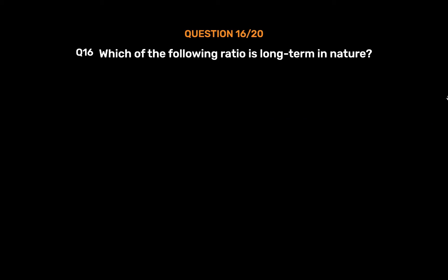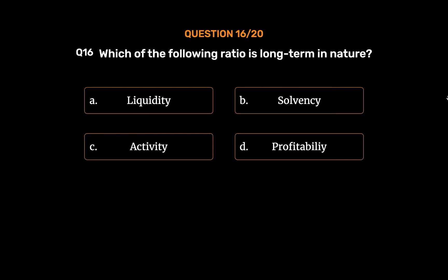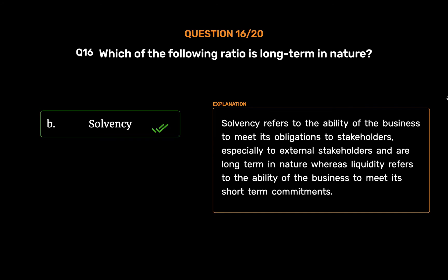Question number 16. Which of the following ratio is long-term in nature? Option A: Liquidity. Option B: Solvency. Option C: Activity. Option D: Profitability. The correct answer is Option B: Solvency. Solvency refers to the ability of the business to meet its obligations to stakeholders, especially external stakeholders, and is long-term in nature, whereas liquidity refers to the ability of the business to meet its short-term commitments.